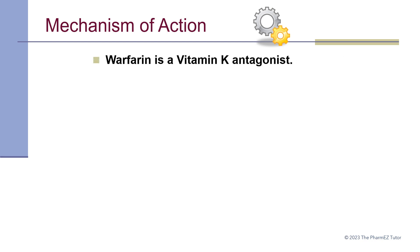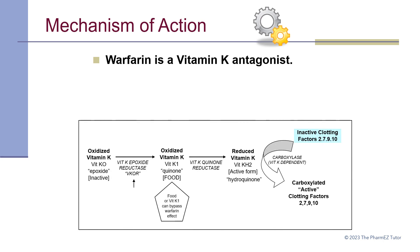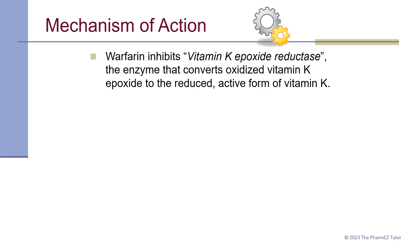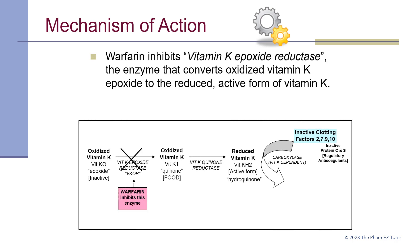Warfarin is a vitamin K antagonist. You can see in the diagram where warfarin works — it inhibits the enzyme vitamin K epoxide reductase, also known as VKOR, thus downstream preventing the carboxylation of the inactive clotting factors to the active clotting factors. It inhibits the hepatic activation of four vitamin K dependent clotting factors as well as endogenous anticoagulants protein C and protein S.